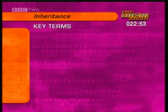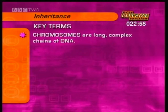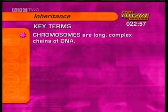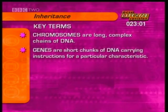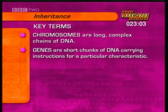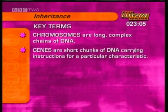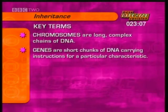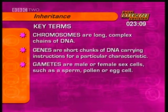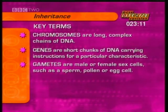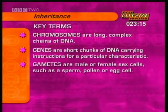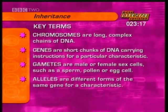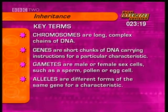Here are some key terms you need to be sure of. Chromosomes are long, complex chains of DNA within the nucleus of each cell. Genes are short chunks of chromosomal DNA which are responsible for particular characteristics. Gametes are male or female sex cells, such as a sperm, pollen or egg cell. Alleles are different forms of the same gene for a characteristic.